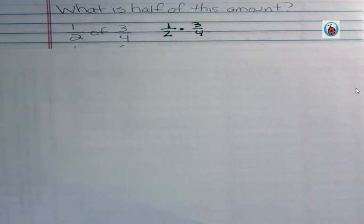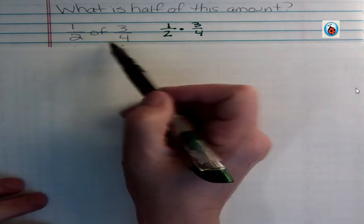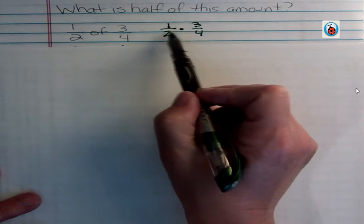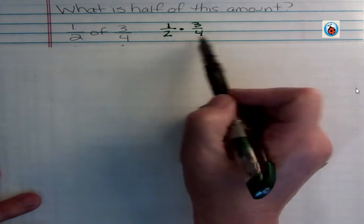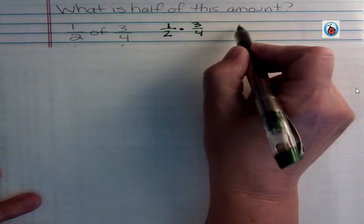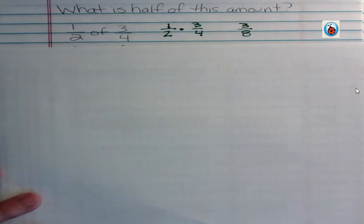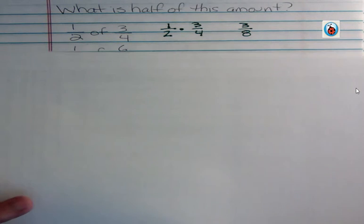So if you're asked something like one half of three-fourths, what is half of three-fourths? When you say "of" that means multiply. So if you're saying half of something, you're just going to multiply straight across and the half of three-fourths would be three-eighths. You're just doubling that four on the bottom.